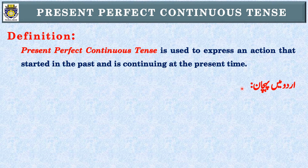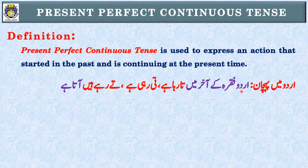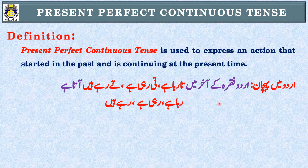آئیے دیکھتے ہیں اردو میں اس کی پہچان کیا ہوتی ہے۔ اگر اردو فقرہ کے آخر میں 'تا رہا ہے، تی رہی ہے، یا تے رہے ہیں' آ جائے تو وہ Present Perfect Continuous Tense کا sentence کہلائے گا۔ اسی طرح اگر 'رہا ہے، رہی ہے، یا رہے ہیں' آ جائے تو وہ بھی Present Perfect Continuous Tense کا sentence ہو سکتا ہے۔